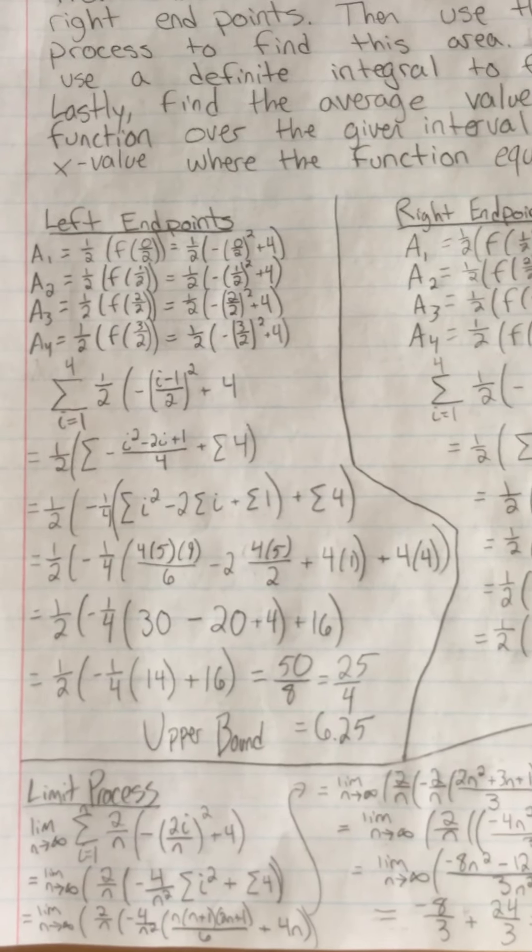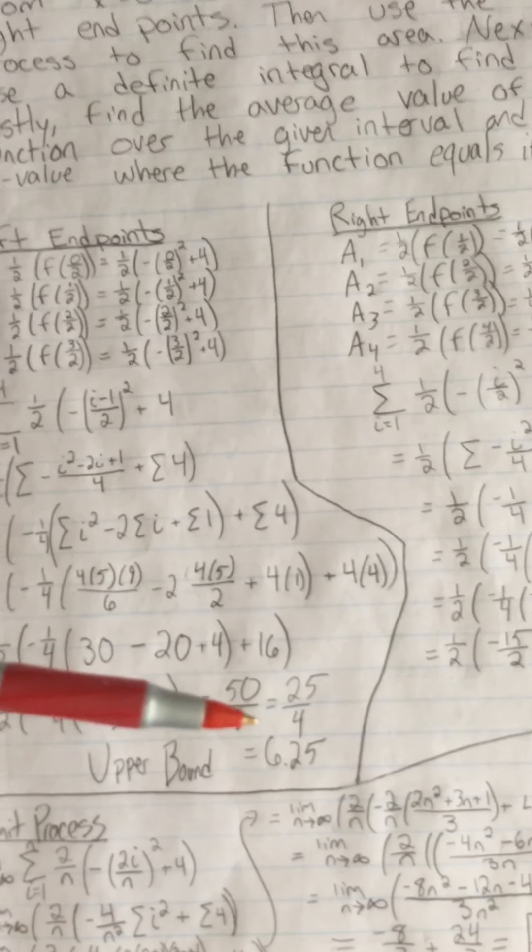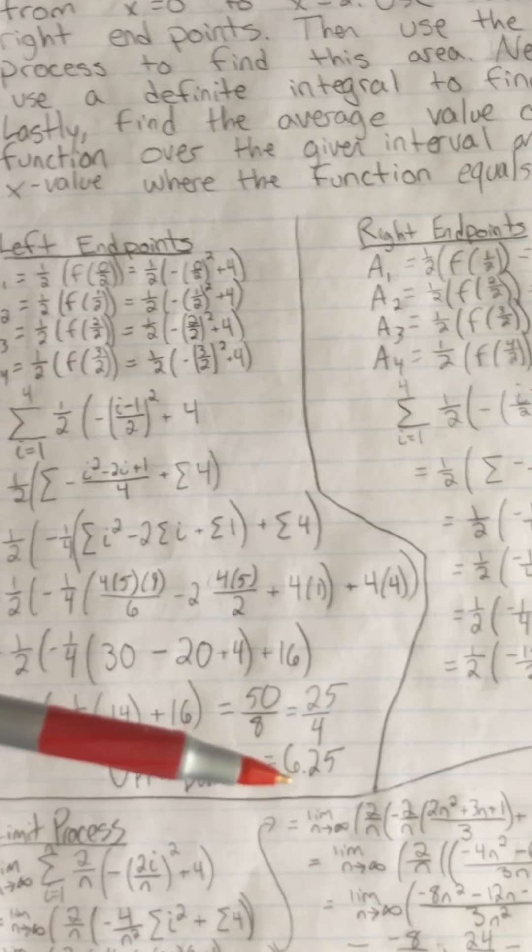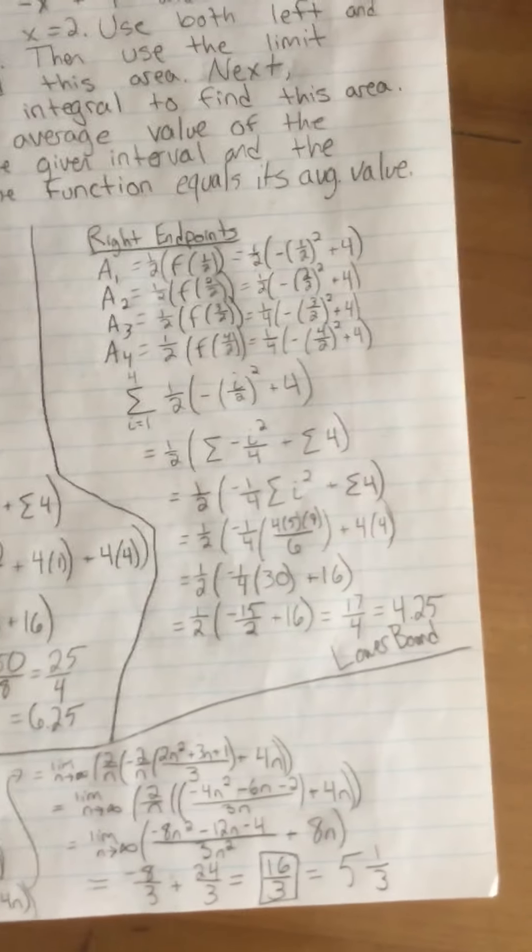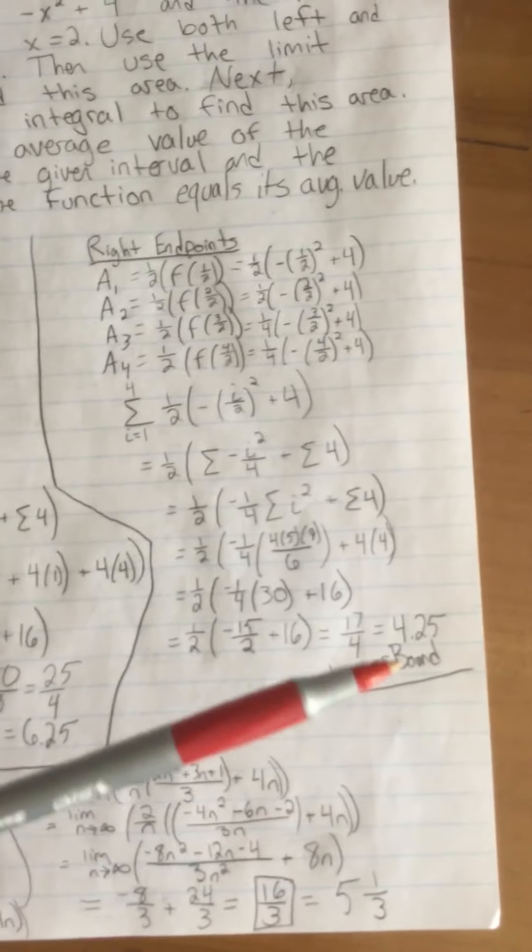With these left endpoints, if we were to look at this on a graph and actually draw the rectangles, this is an upper bound. So the rectangles would be above your graph. This is the largest that our area would be, so we would say that it has to be less than 6.25. And then when we do it with our right endpoints we get 4.25, so we know it has to be greater than that.